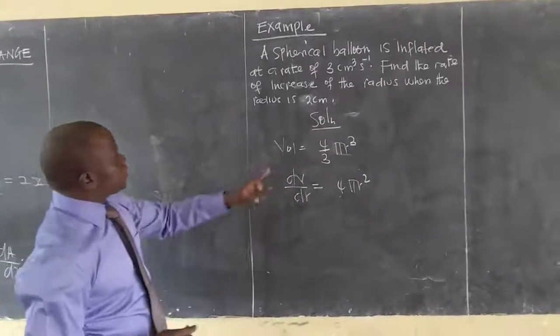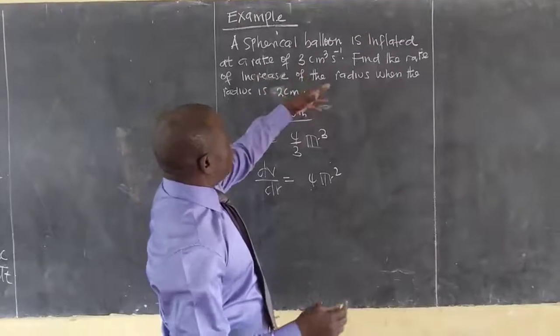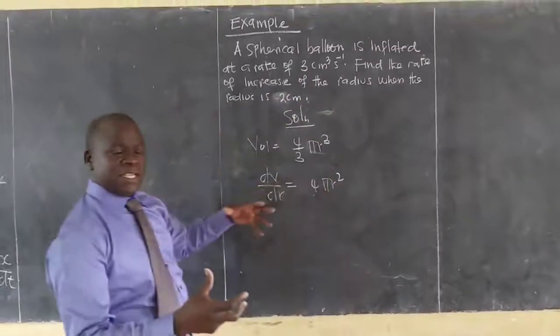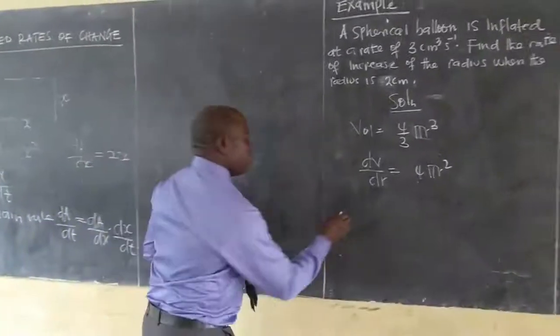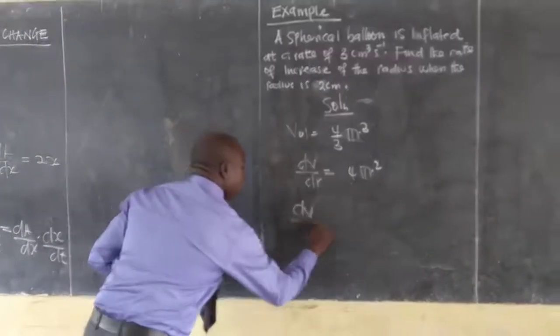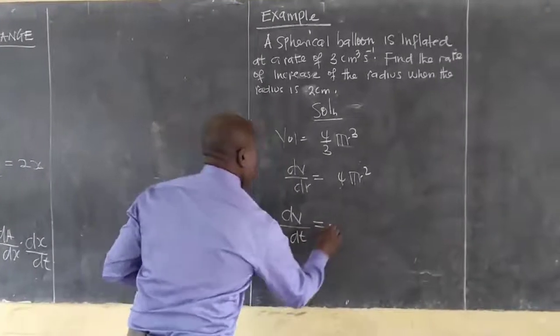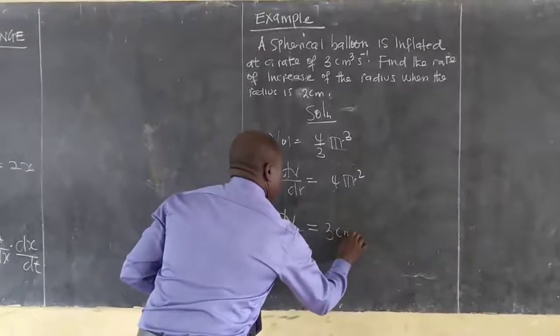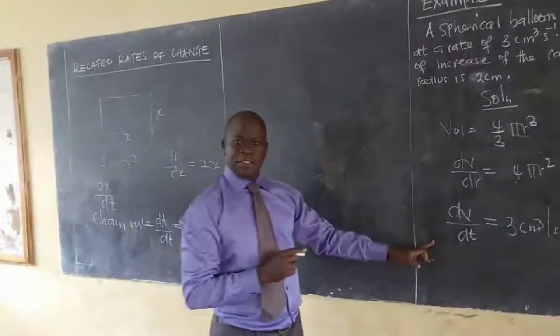Now, what I know in this case is the rate of inflated balloon, that is the rate of change in volume. So I now know dV/dt which in this case gives a positive 3 cubic centimeters per second. That is dV/dt.